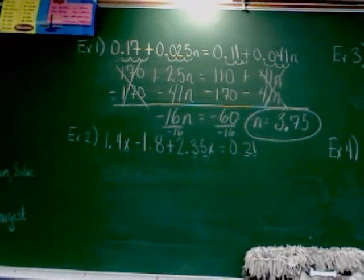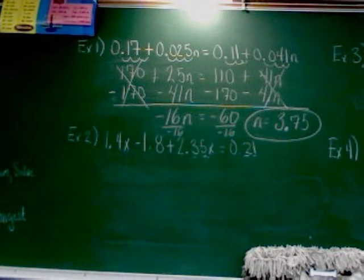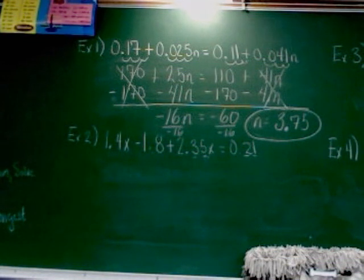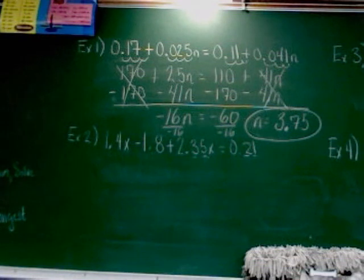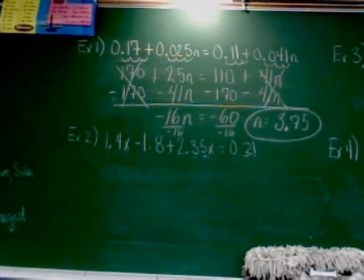Let's take a look at example two: 1.4x minus 1.8 plus 2.35x equals 0.21.